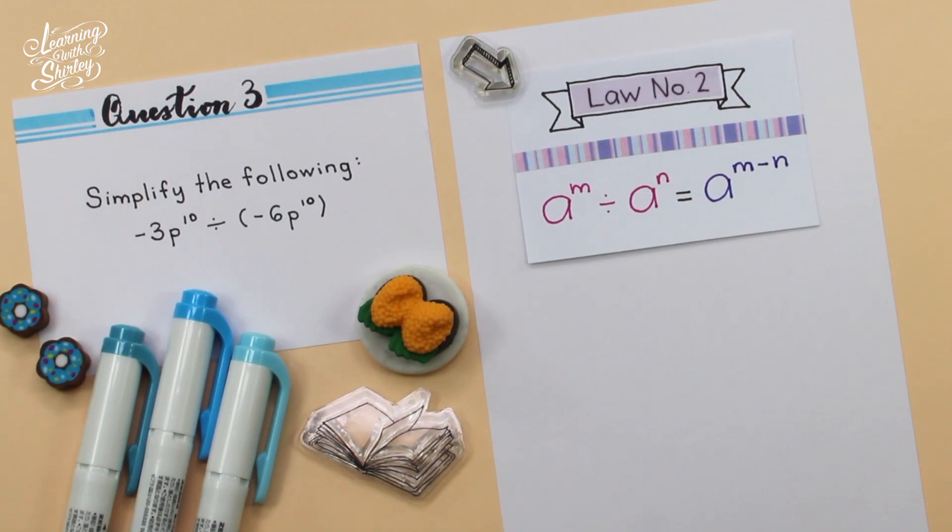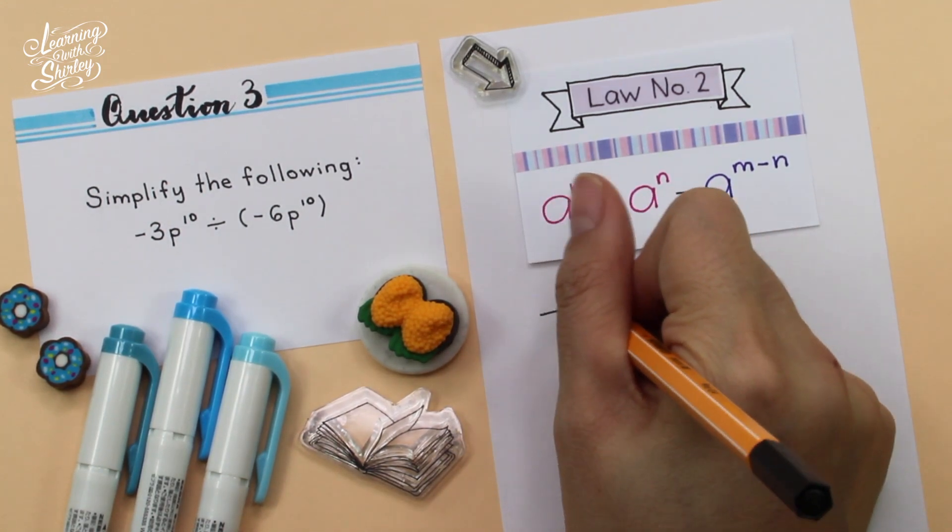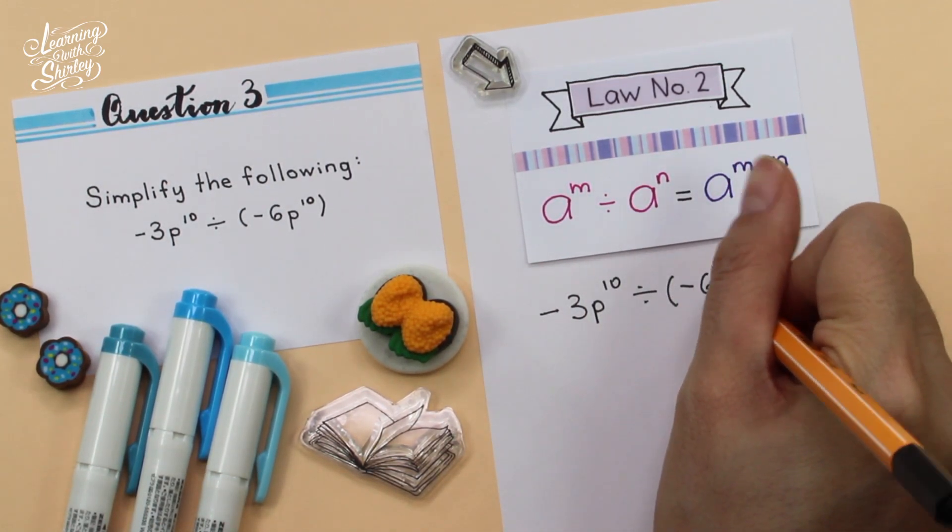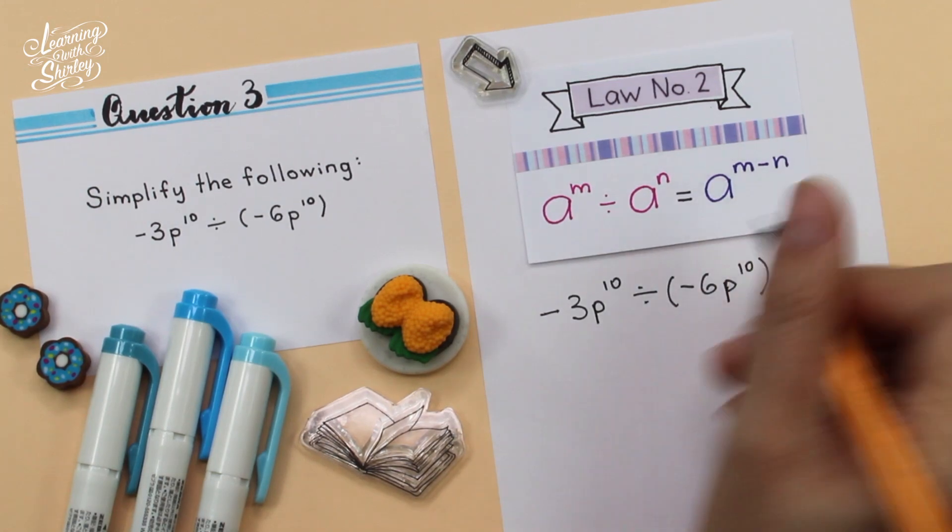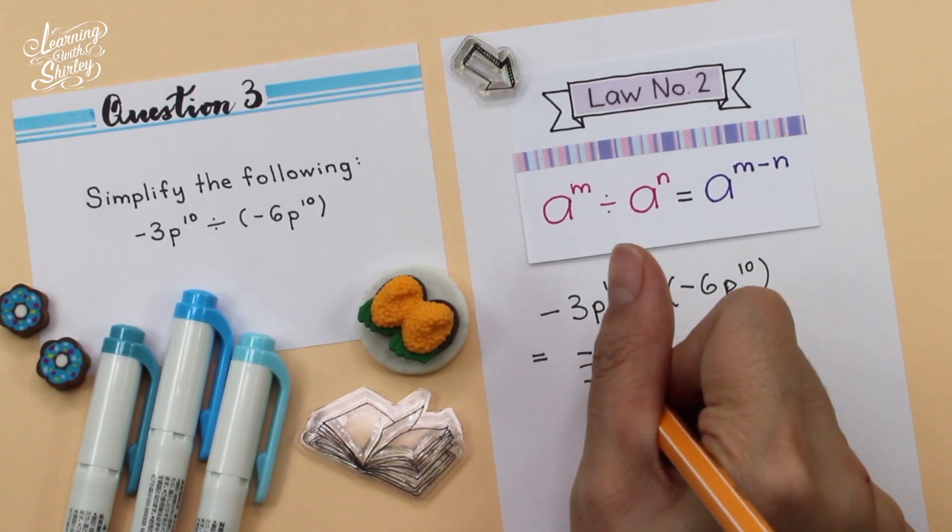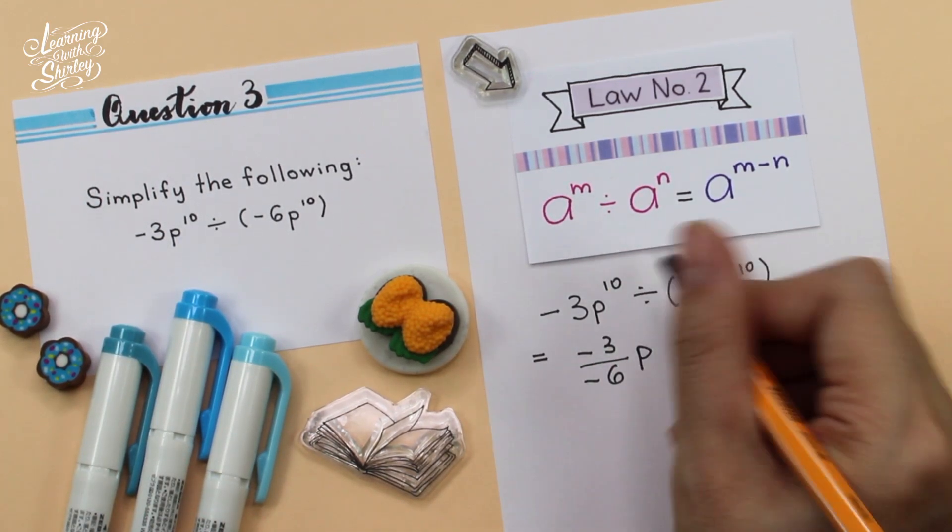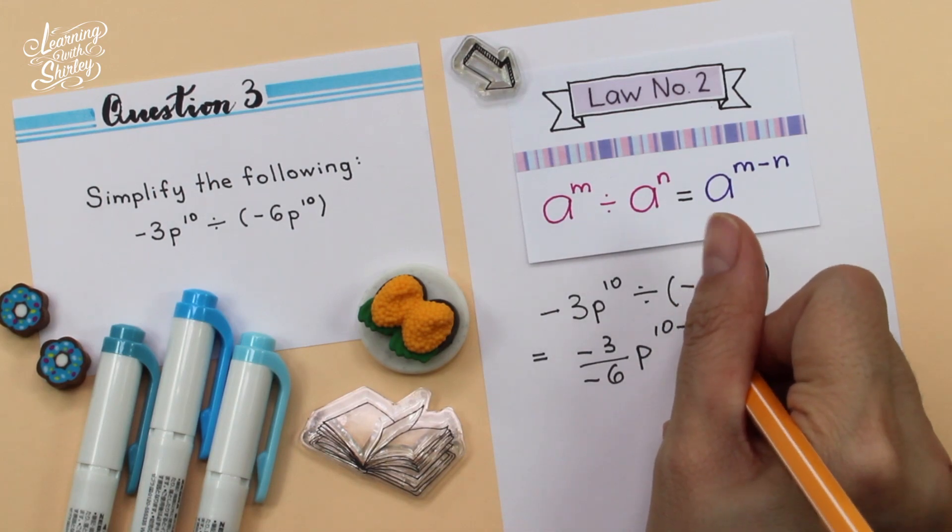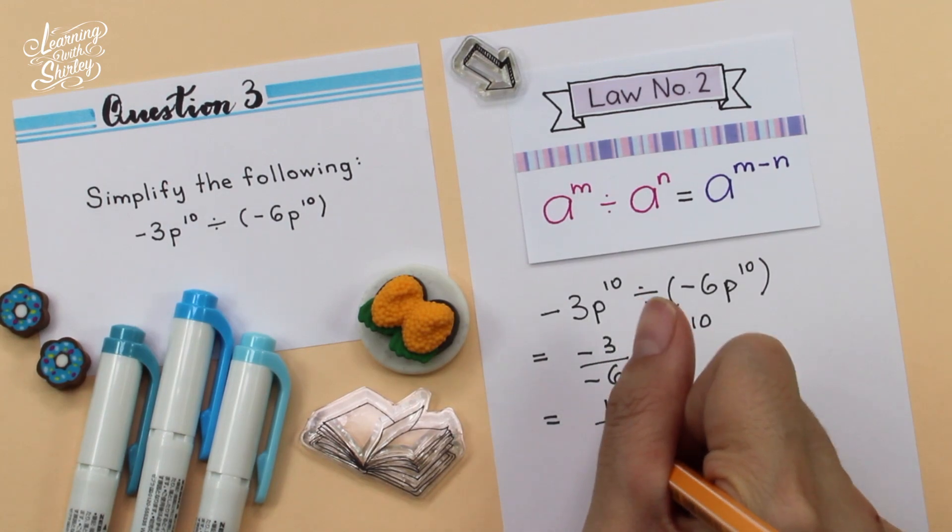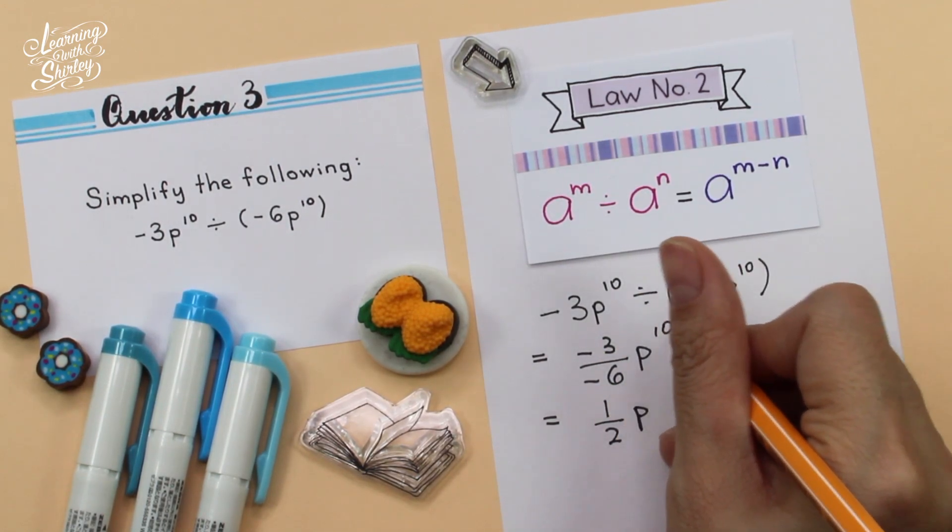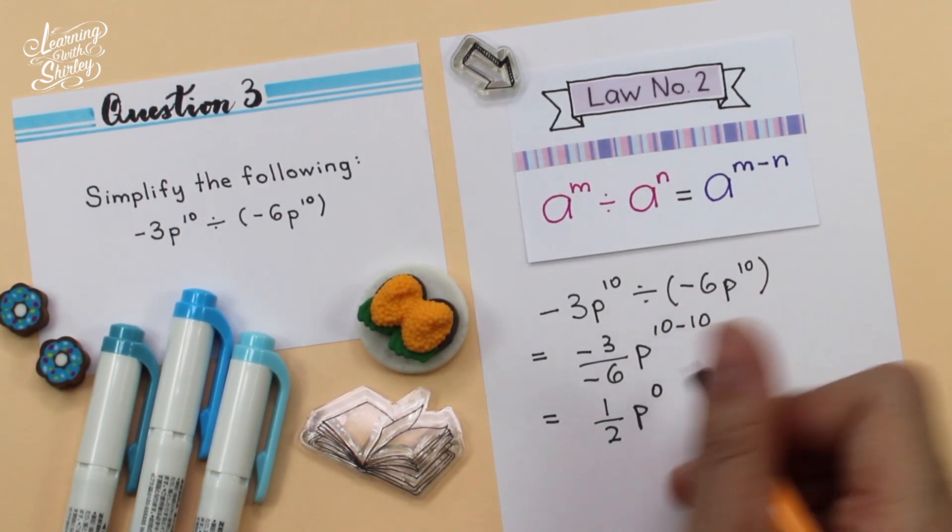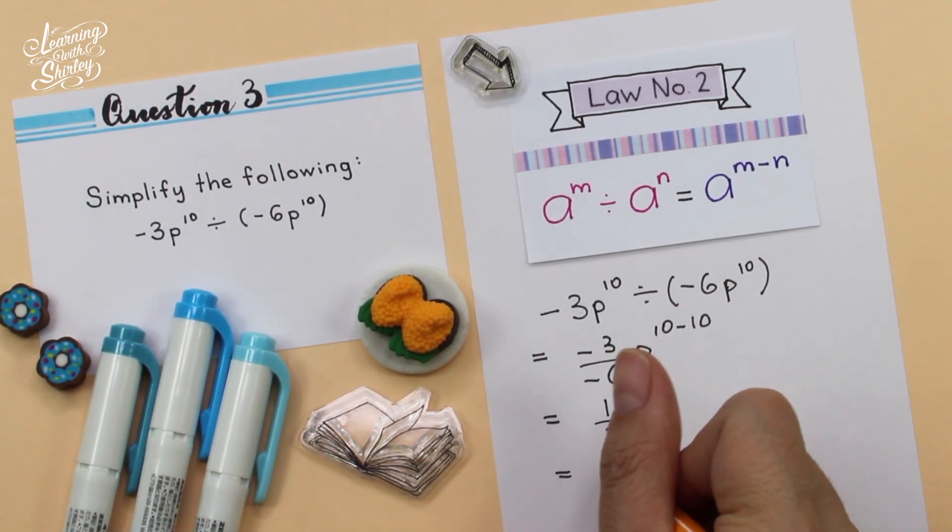So first of all, we write down the question given, which is negative 3p to the power of 10 divided by negative 6p to the power of 10. So we divide the coefficients, which is negative 3 over negative 6, and then we minus the indices, which is 10 minus 10. So equals negative 3 divided by negative 6 is 1 over 2. So p 10 minus 10 is 0, and p to the power of 0 is equivalent to 1. Therefore, the answer is half.